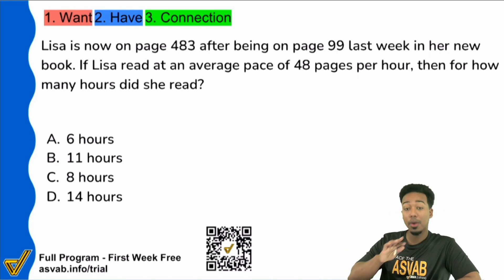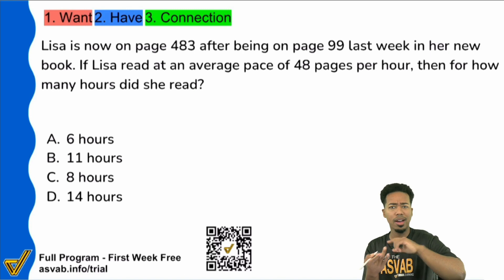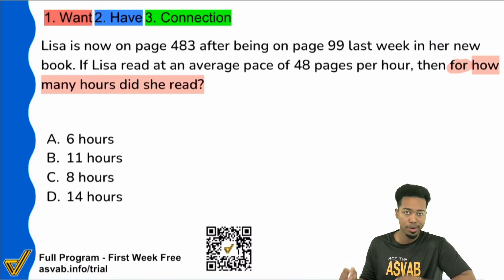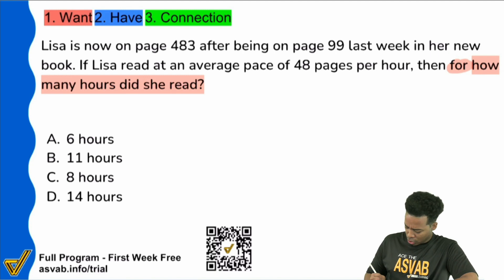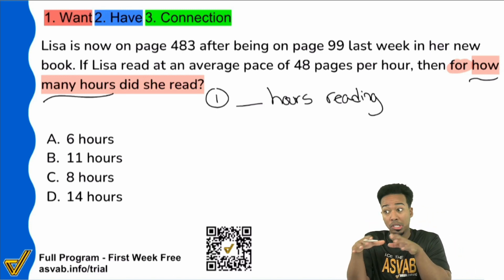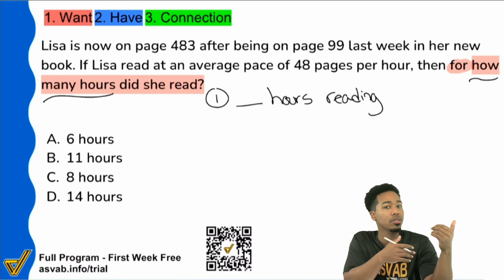So the first step is, no matter what, remember we always want to read the question first. The question is always going to start from who, what, when, where, how many, what's the following. That's where we want to start, not the actual information. How many hours did she read? So what I know is that if I'm looking for how many hours, that's a time frame. So I'm looking for blank hours reading. We want to make sure that we get all the facts so we know how what we want to find is related to the information that we have.